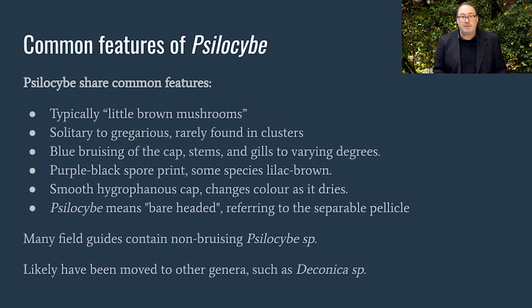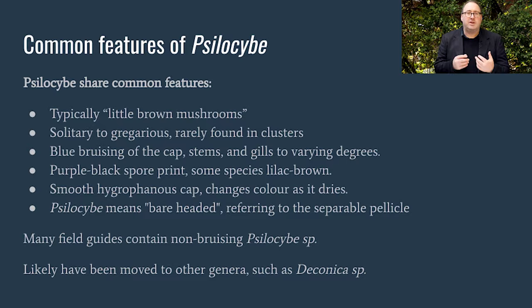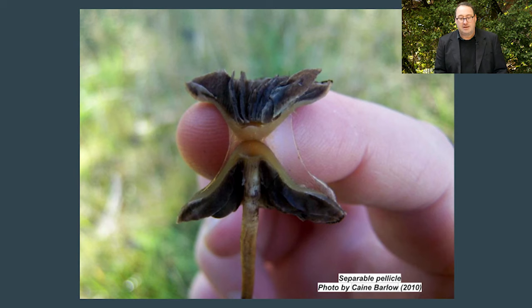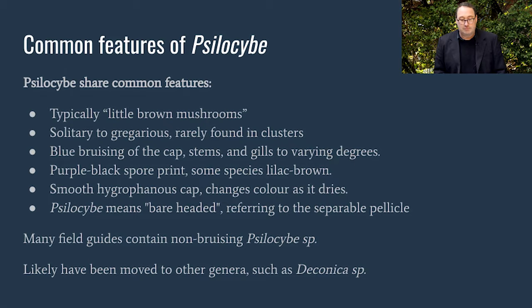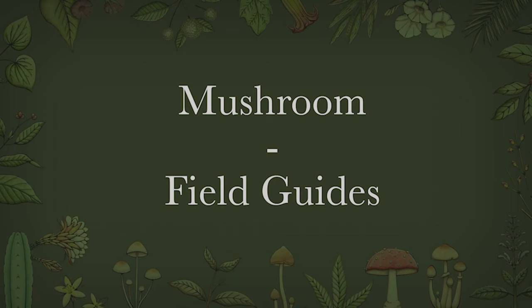Another feature is the purple-black spore print. In some species this is lilac-brown, and in rare cases where there's a genetic mutation in the pigment, the spores may actually turn up as brown — which can be quite confusing given the brown spore prints of the lookalikes Galerina and Cortinarius. They have smooth hygrophanous caps, slightly sticky or moist-looking texture, and the cap changes colour as it dries out, going from beautiful caramel brown to a lighter brown or even a cream or off-white colour. The name Psilocybe means 'bareheaded' and refers to that separable pellicle demonstrated earlier. Many field guides still contain non-bruising Psilocybe species, which have likely been moved to other genera such as Deconica.